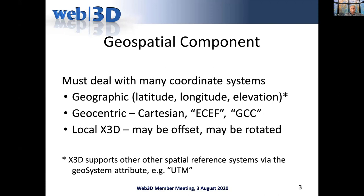In the geospatial world, people need to deal with all kinds of different coordinates, but most of the time it boils down to latitude, longitude, elevation. There are different coordinate systems: Cartesian, Earth-centric coordinate system, and in the computer graphics world, the local X3D coordinate system, which is this arbitrary unitless X3D space. The geospatial component tries to simplify dealing with conversions between these three coordinate systems.